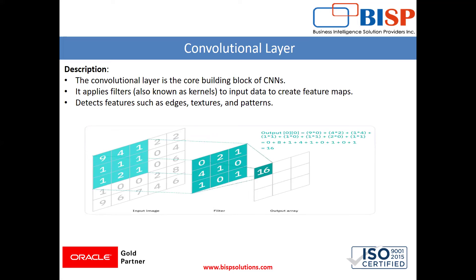For example, if a person's image is given, the convolutional layer detects the edges of the face — where the face starts and can be separated from the background. You might have also seen in some online meeting applications where the camera blurs out the background but does not blur your face. Detecting the edges, texture, and pattern of an image is what the convolutional layer does.